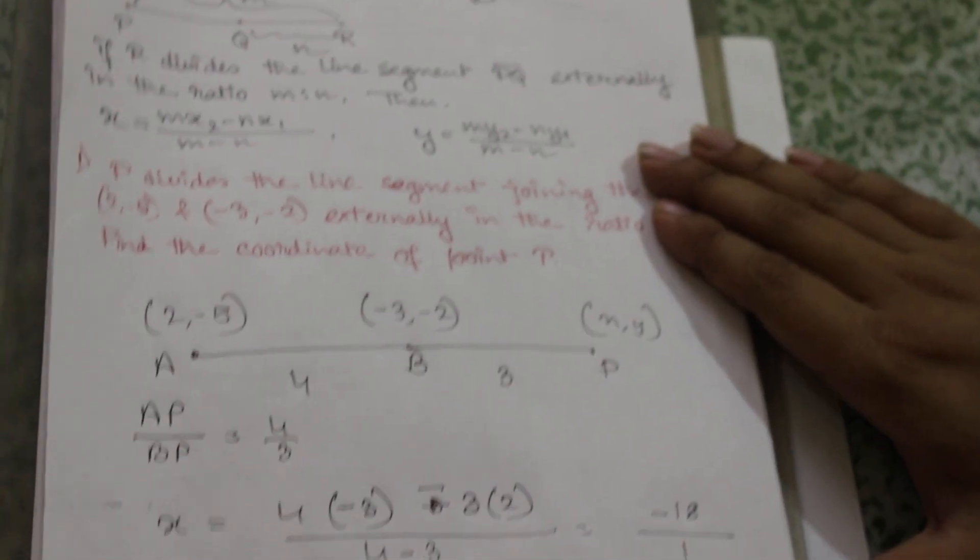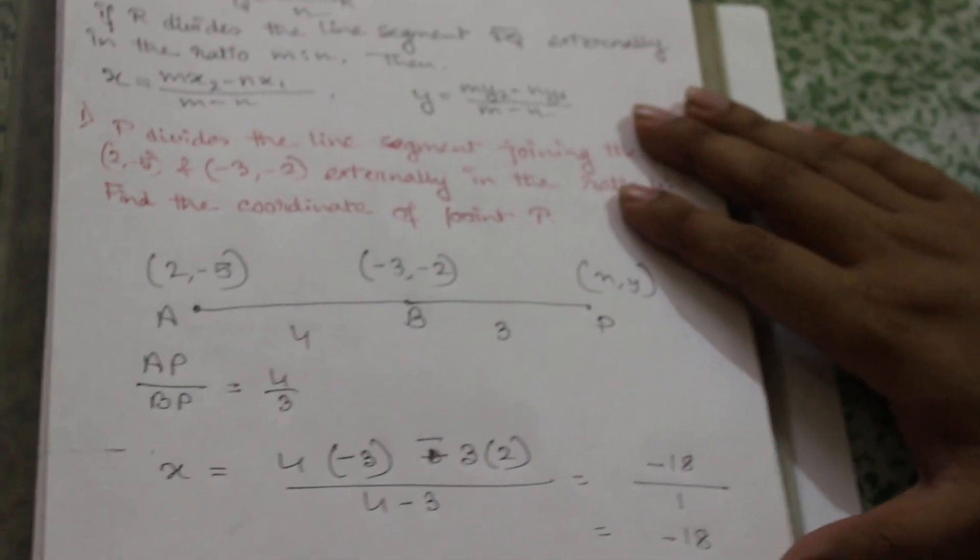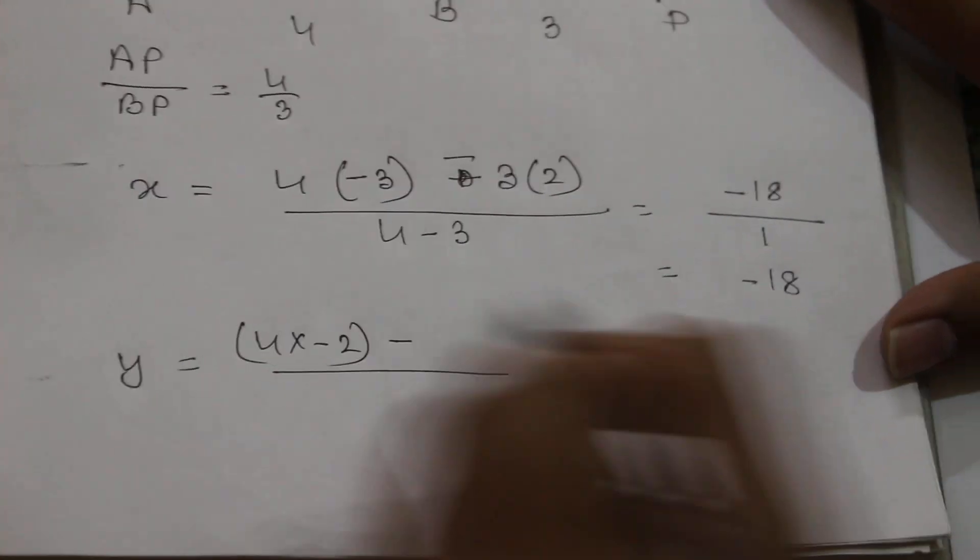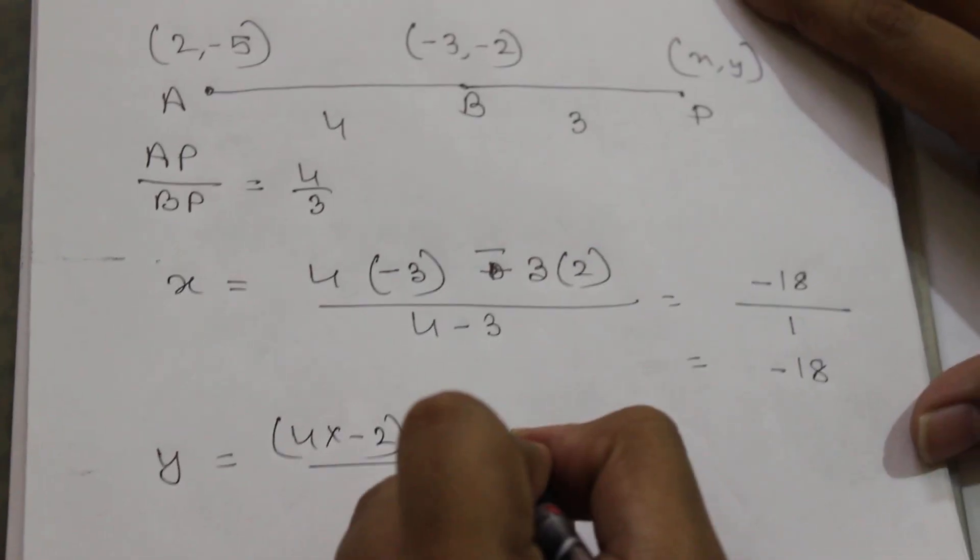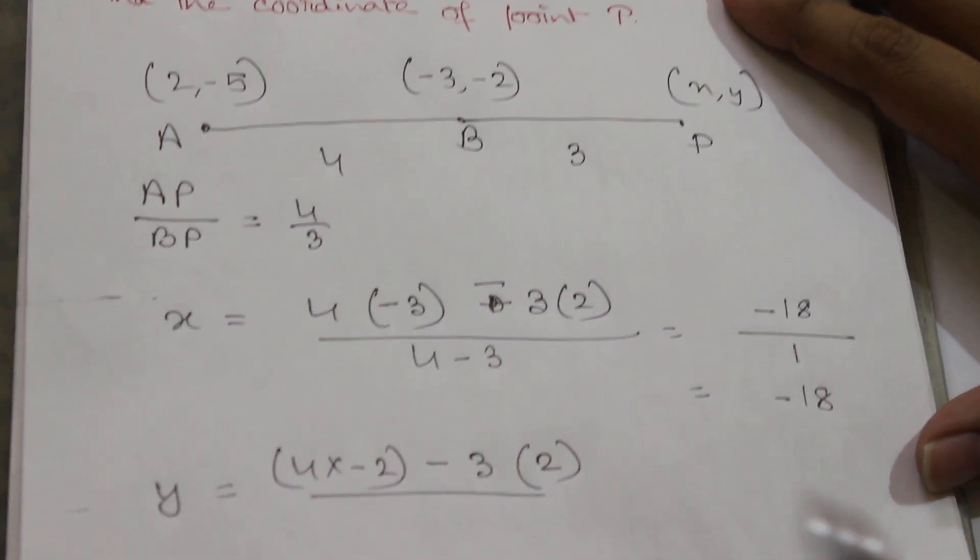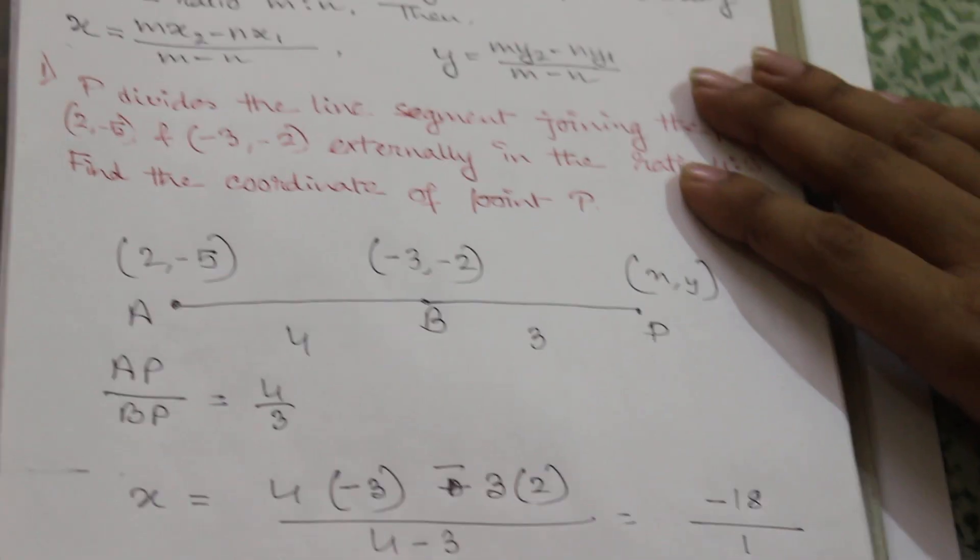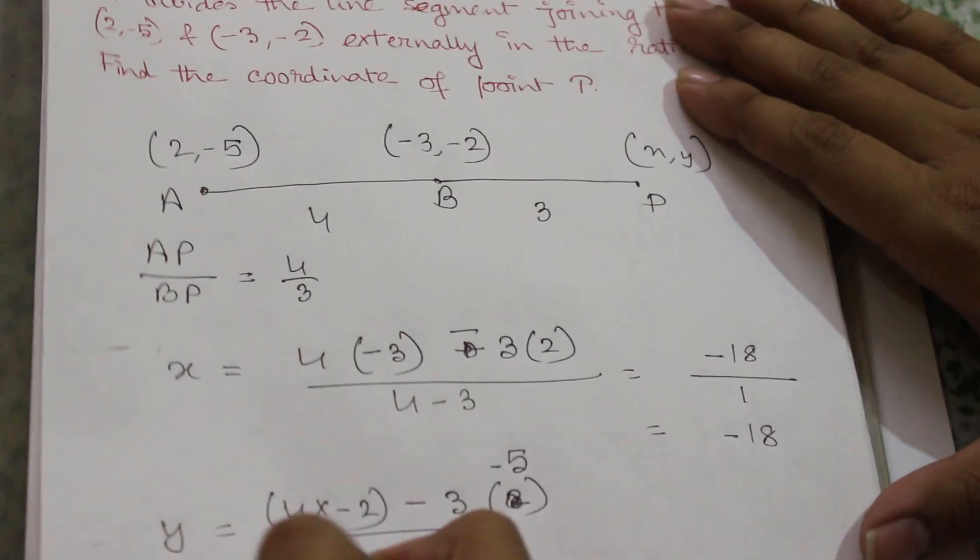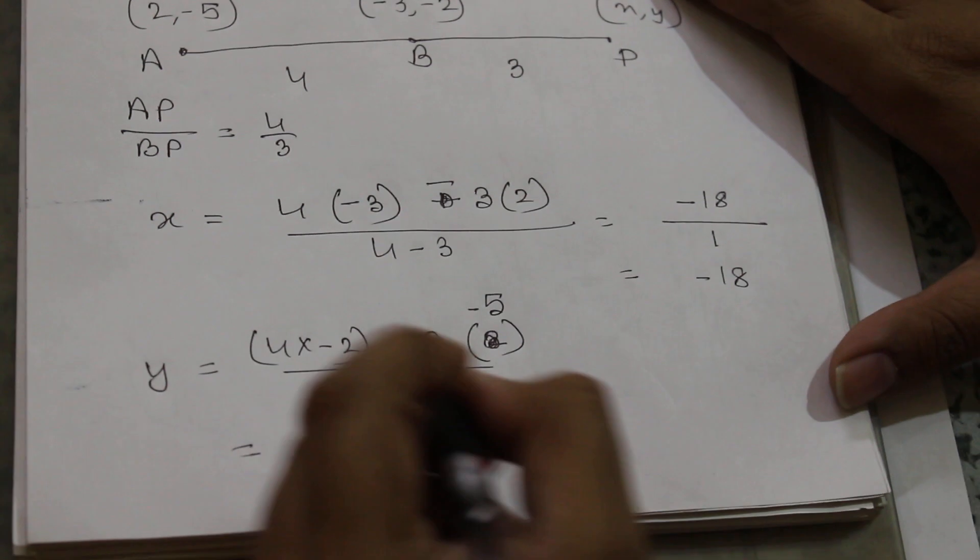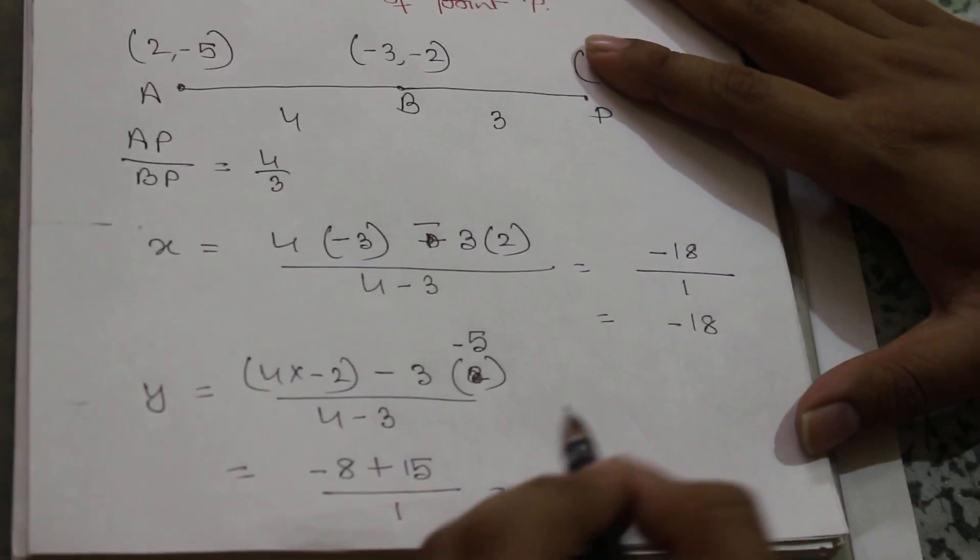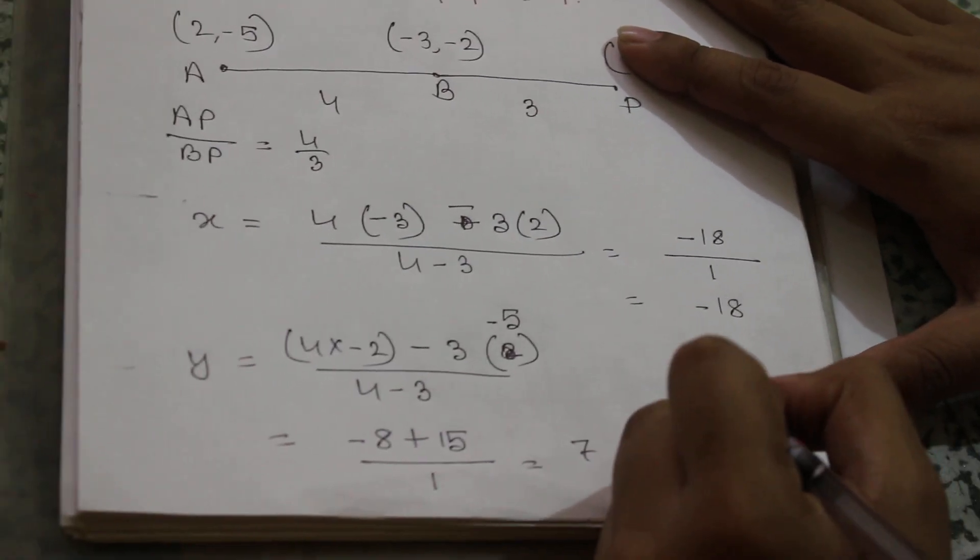And y will be equal to 4 into (-2) minus 3 into (-5) by 4 minus 3. So this will be equal to -8 plus 15 by 1, that is 7. So the point is